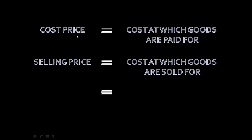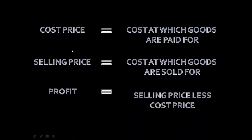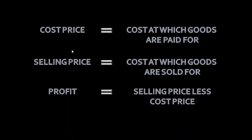First you need to buy the goods in order to sell the goods. The profit is the selling price less the cost price, or the difference between the selling price and the cost price. Let's look at an example.